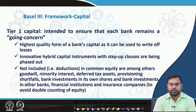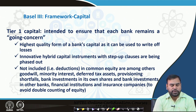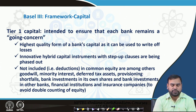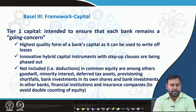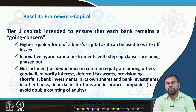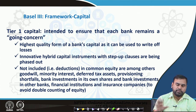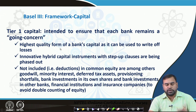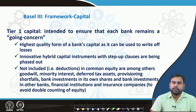They have also phased out hybrid capital instruments with certain set clauses. Deductions from common equity include goodwill, minority interest, deferred tax assets, provisioning shortfalls, bank investments in its own shares, and bank investments in other banks, financial institutions, and insurance companies — these are not considered in this particular context to avoid double counting of equity. The tier 1 capital is mostly common equity, and the quality of the capital base should be so high that at any point of time they can write off those losses they are going to incur.